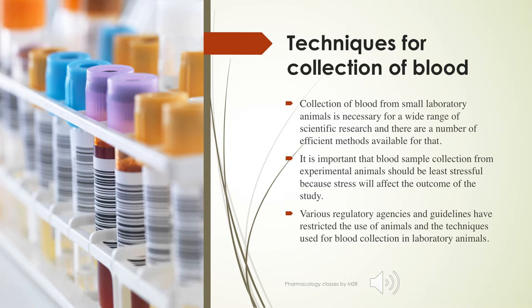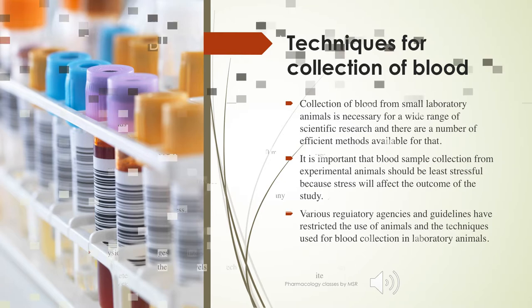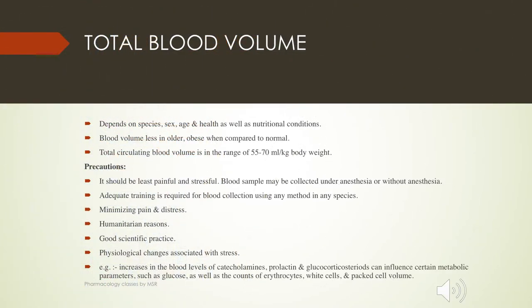Whenever we are collecting the blood sample, the animal should have minimal stress. If the stress is more, our results will be altered. Stress in animals may cause increased blood levels of catecholamines, prolactin, and glucocorticoids. Erythrocyte and WBC levels may also be altered because of excess stress.